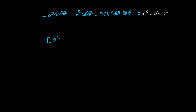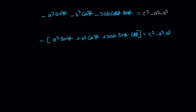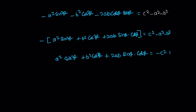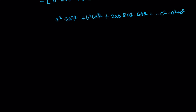Taking out the minus common and multiplying: a² sin²θ plus b² cos²θ plus 2ab sinθ cosθ is equal to a² plus b² minus c². The left side is the expansion of (a sinθ plus b cosθ)², so (a sinθ + b cosθ)² equals a² plus b² minus c².